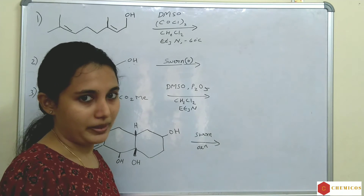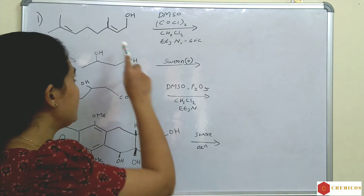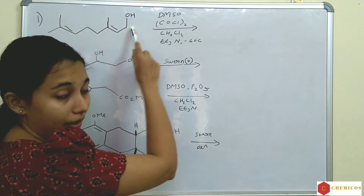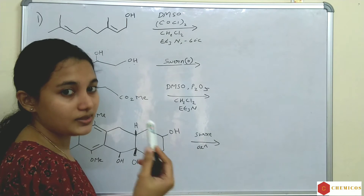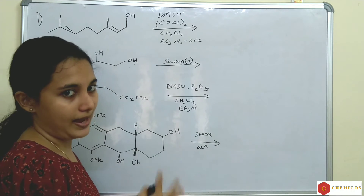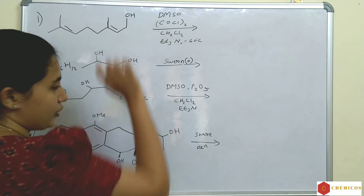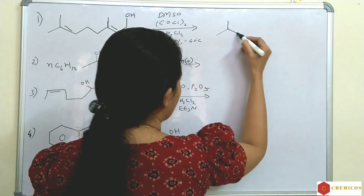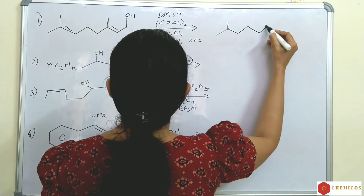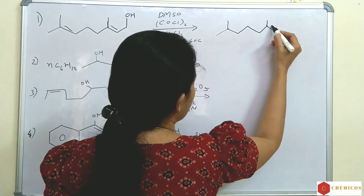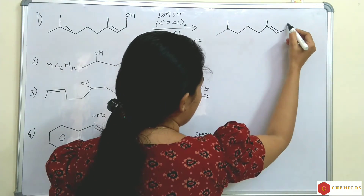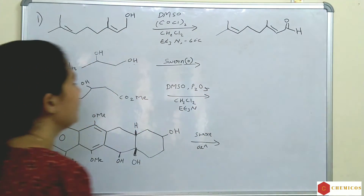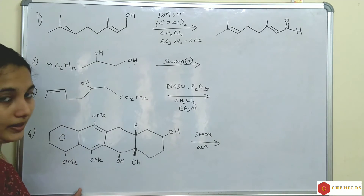Now let's look at some examples. First example: this is a primary alcohol, and when we oxidize a primary alcohol it gives an aldehyde. So the OH will convert to CHO. The double bond in the molecule is not affected.